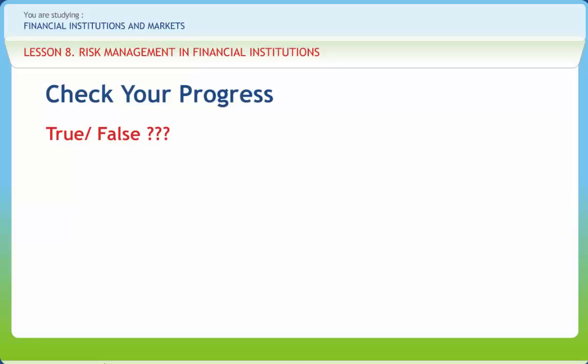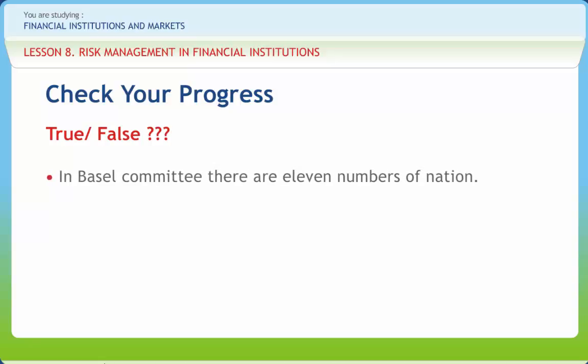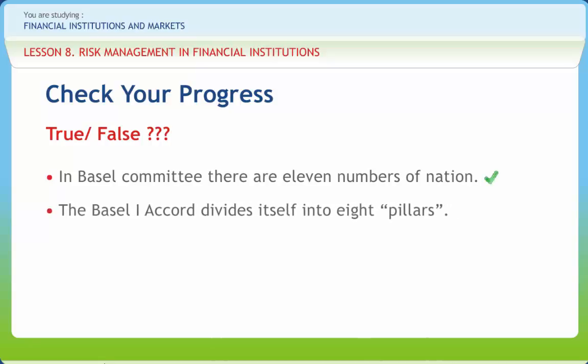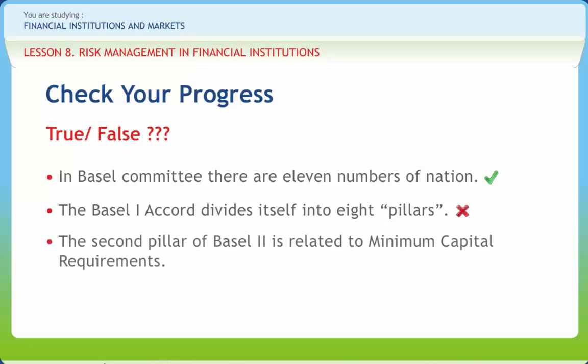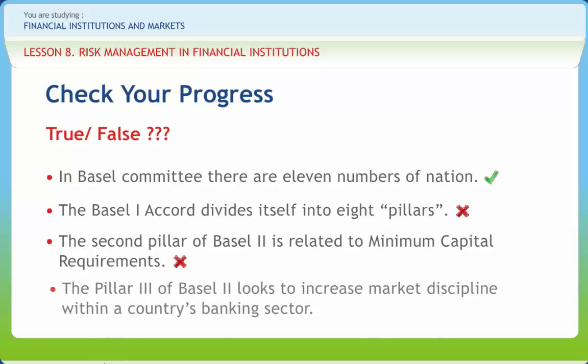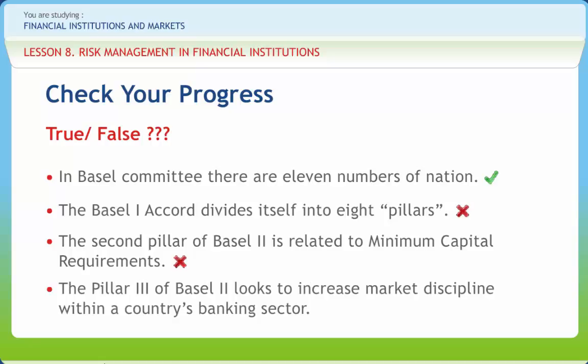Let us check if we have understood the various concepts discussed in this lesson. In Basel Committee, there are 11 nations — Right or Wrong? Right. The Basel 1 accord divides itself into 8 pillars — Right or Wrong? Wrong. The second pillar of Basel 2 is related to minimum capital requirements — Right or Wrong? Wrong. Pillar 3 of Basel 2 looks to increase market discipline within a country's banking sector — Right or Wrong? Right.